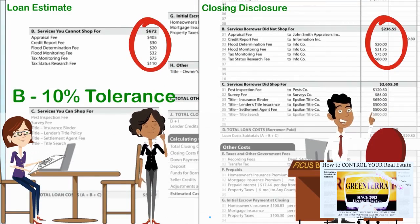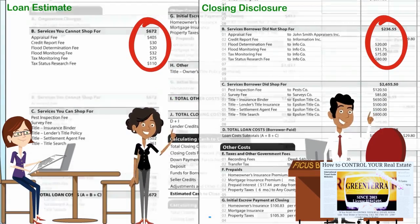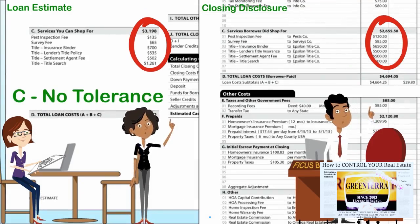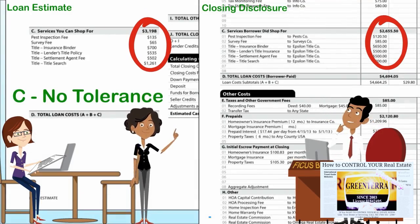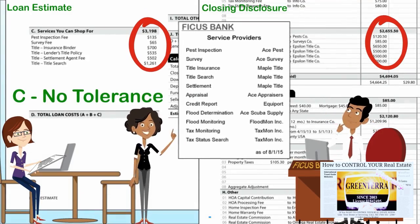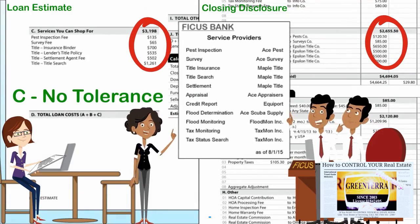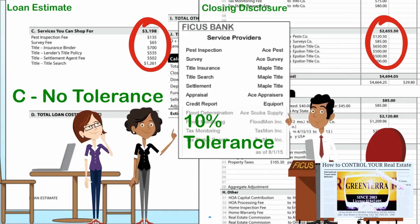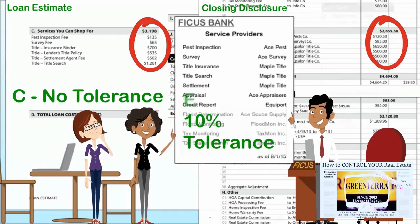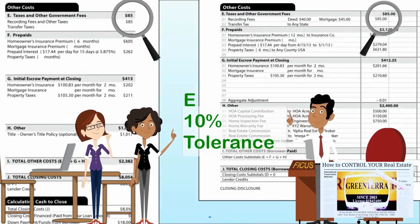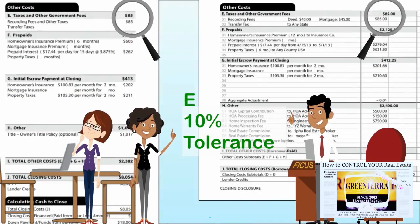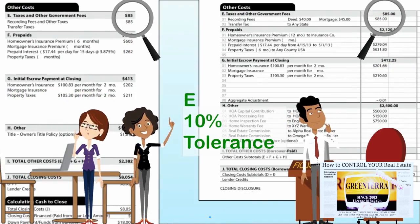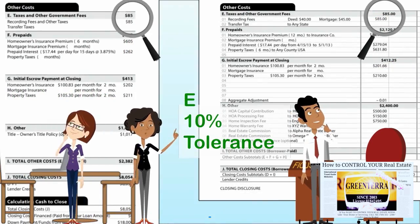Section C — services you can shop for — has no tolerance limit, but if you select a provider from your lender's list, their actual costs should be no more than 10% greater than the estimate. Recording fees (E) are also subject to a 10% tolerance.